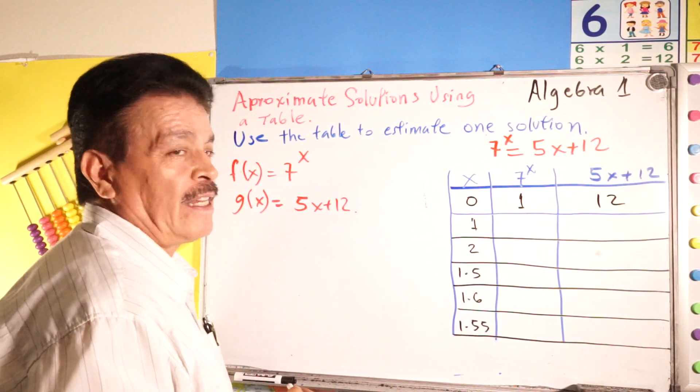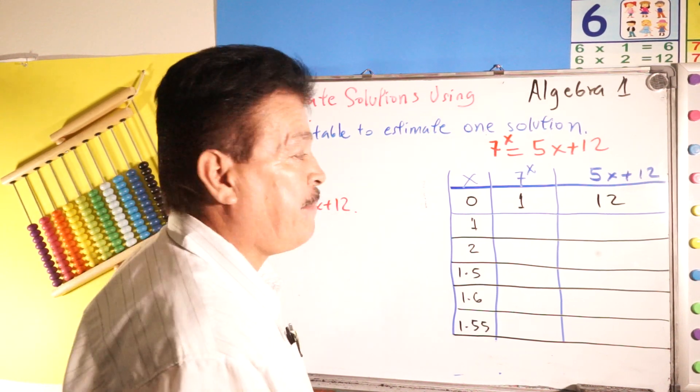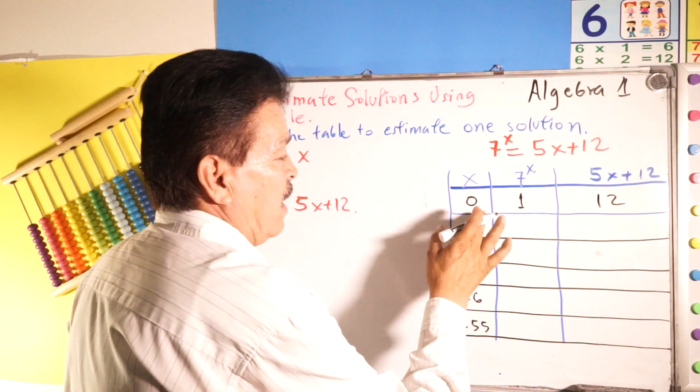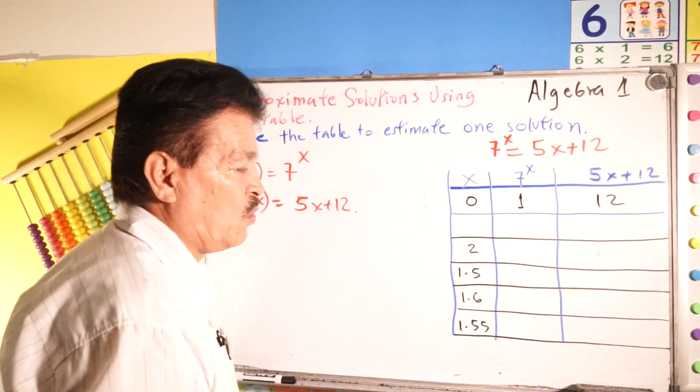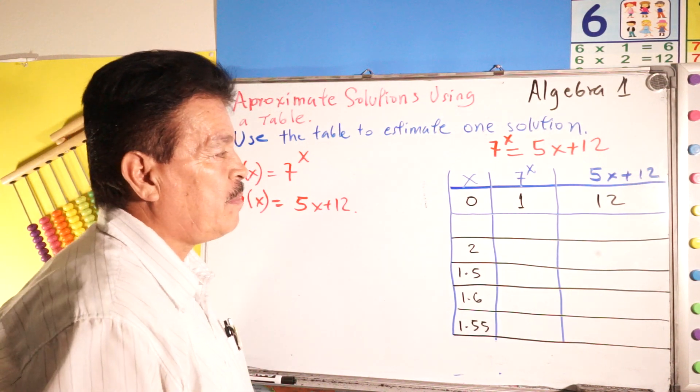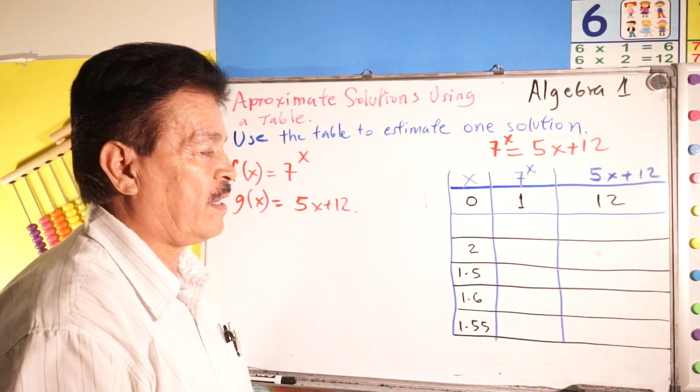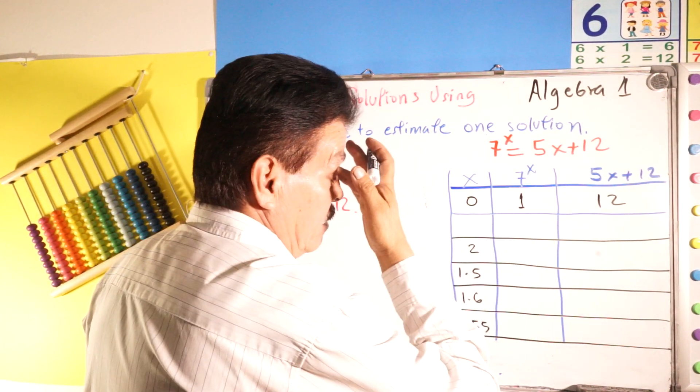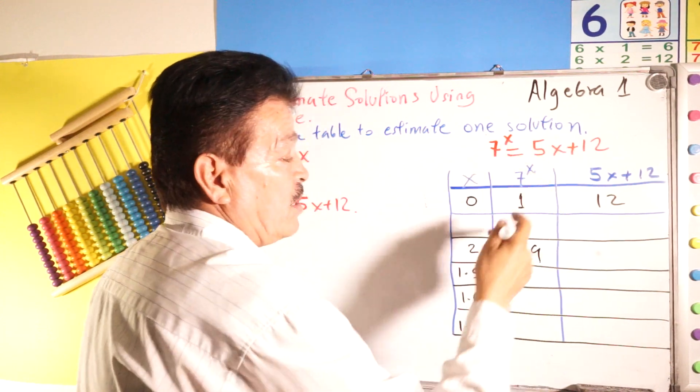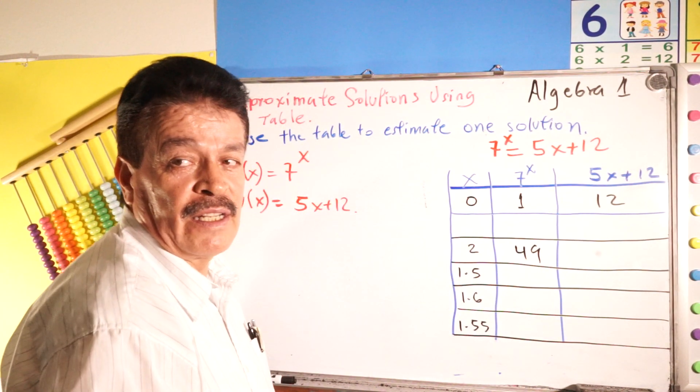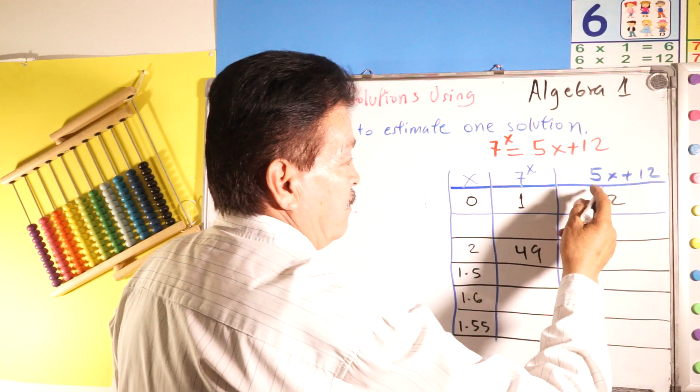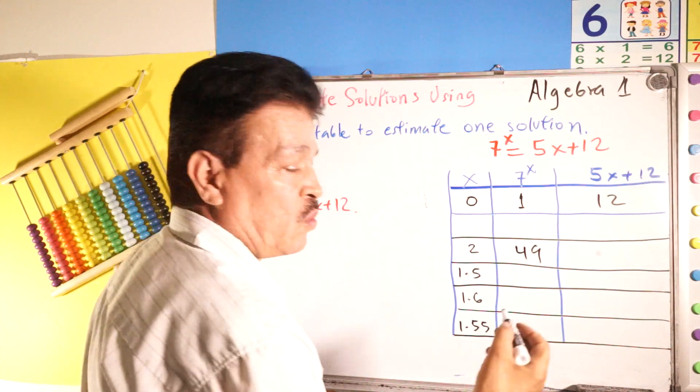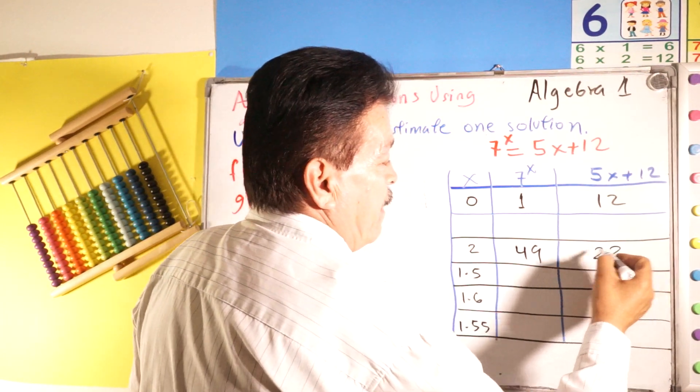Next, let's just keep one, let's go to the two. Because we have 1.5 right there. Let's use a two. Here is 49, seven to the second power, 49. Here, five times two is 10 plus 12 is 22.